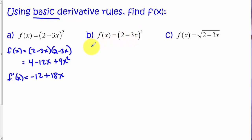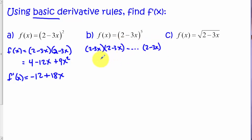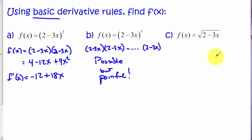Now we could do the same thing here, but that's going to be quite painful because we would have to multiply this out five times. So this is possible, but painful. Here we don't have any algebra we could do to expand this and get rid of this square root. So at this point, with the basic rules, this one's impossible.